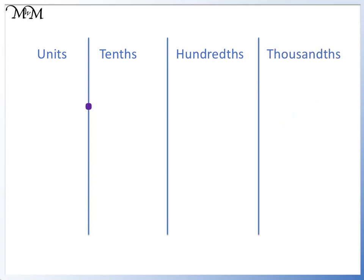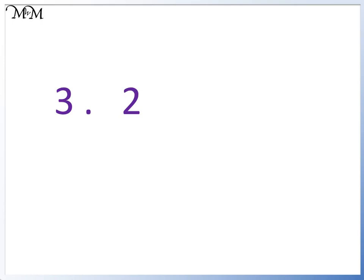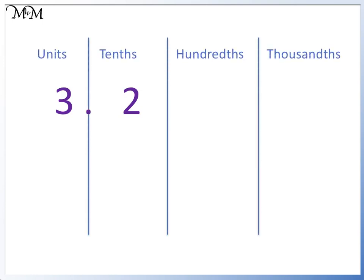We've looked at how we can convert decimals less than 1 into a fraction, but what if the decimals are greater than 1? For example, 3.2. We'll use the place value columns to help us. Looking at 3, it is on the left-hand side of the decimal point. It is in the units column, and it's a whole number, so we can simply start by writing 3.